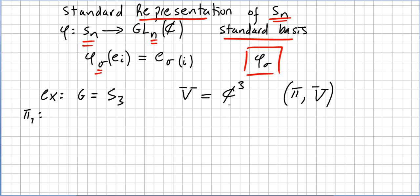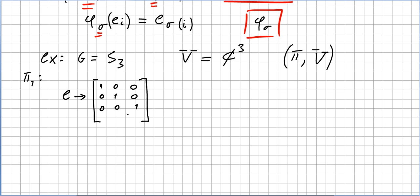We're on the standard basis. The identity, meaning the permutation where 1 goes to 1, 2 goes to 2, 3 goes to 3, is the identity of the group. The identity will go to 1 goes to 1, 2 is in 2, and 3 is in 3. This matrix represents this permutation.